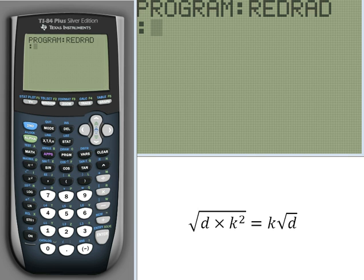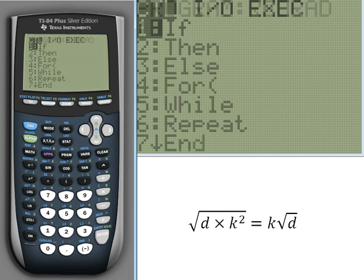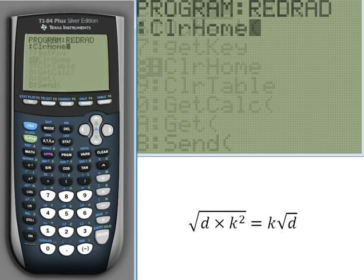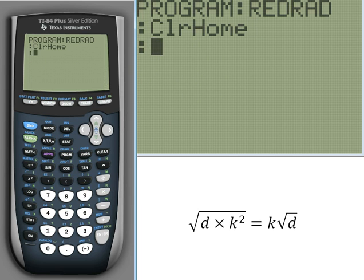To start off here, same as always, we're going to clear the home screen. Go ahead and clear the home screen, get all that clutter away. Next we want to initialize a variable K, as you can see in the lower right hand corner of your screen. We're going to use that, so just initialize it for now. I'll explain it more later. Initialize it to zero.